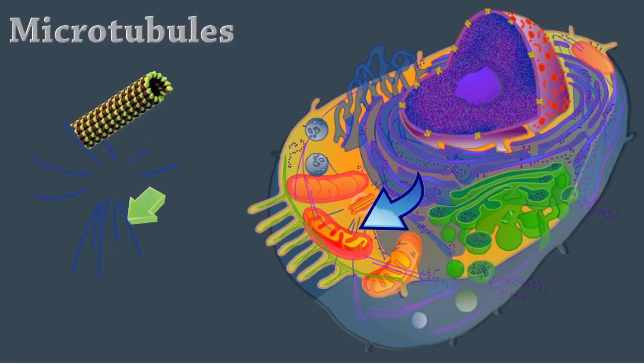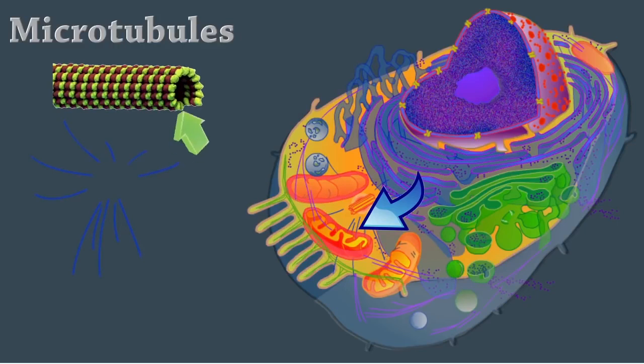Microtubules are cylindrical structures made of tubulin proteins. They support the cell and give it shape. They're involved in intracellular and cellular movements and form centrioles.